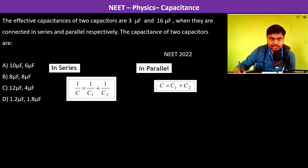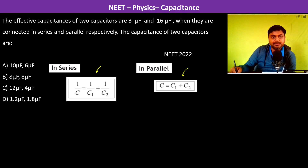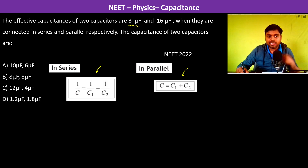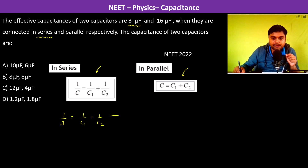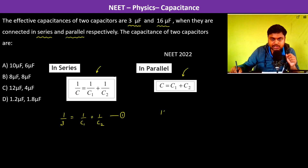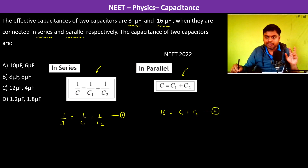When capacitors are connected in series, this is the equivalent capacitance, and when they are connected in parallel, this is the equivalent capacitance. So 3 microfarads is the capacitance when they are connected in series, giving us the first equation: 1/3 = 1/c1 + 1/c2. The second equation is when they are connected in parallel, giving 16 microfarads, so 16 = c1 + c2.